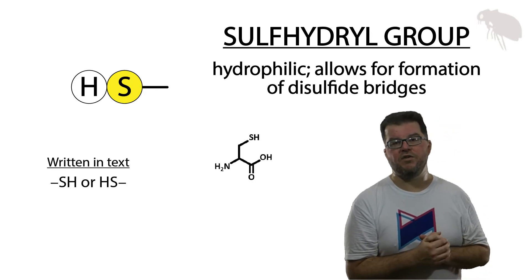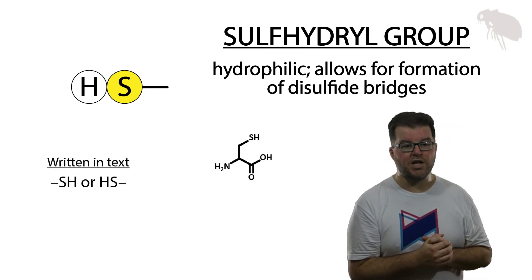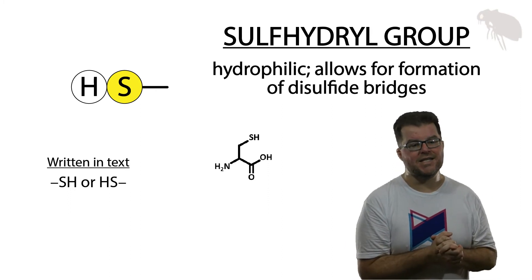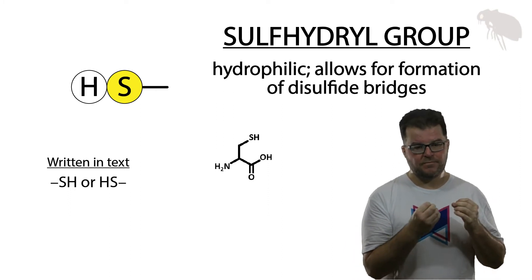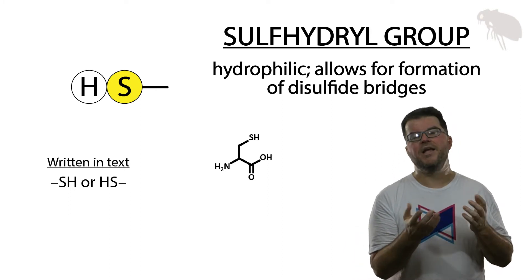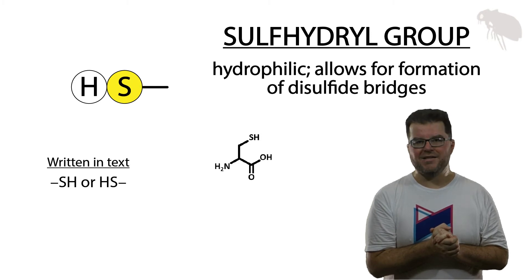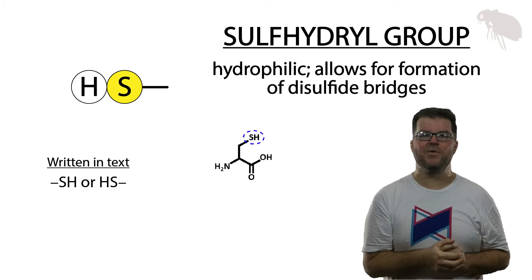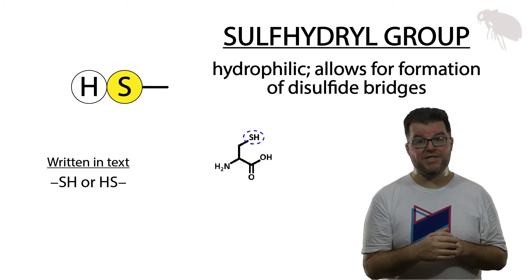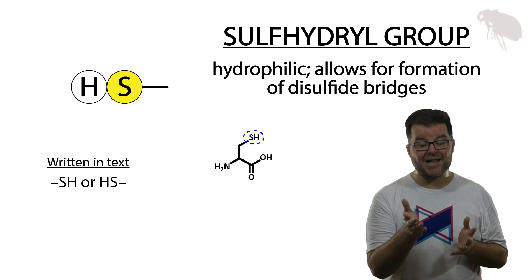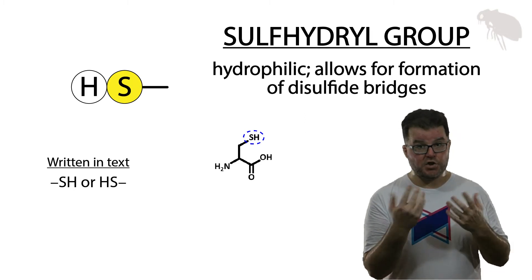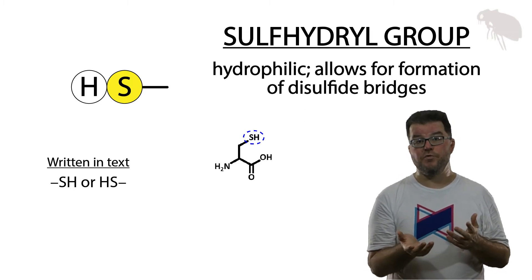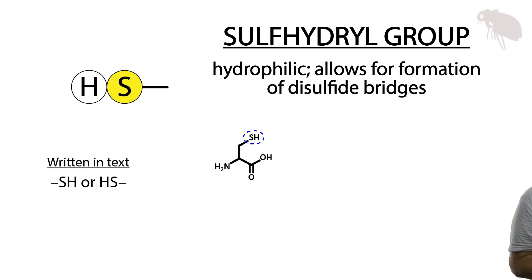Here's an example of a sulfhydryl-containing molecule: cysteine. Cysteine is an amino acid — a sulfhydryl-containing amino acid. It's used in building proteins and it's exactly the molecule I have in mind when I think about sulfhydryl groups forming disulfide bridges.